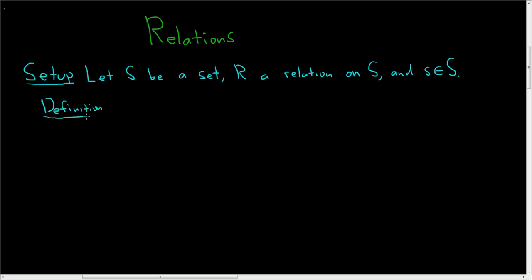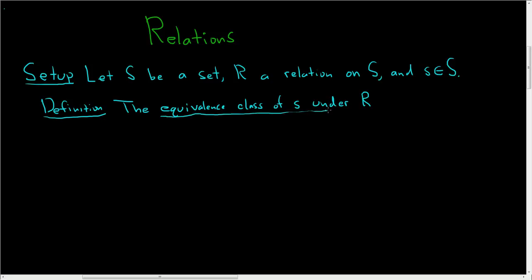Definition: the equivalence class of little s under the relation r. We're defining what is the equivalence class of little s under r. It's a set — denoted with a bar — of all the x's in S such that x is related to little s. If you have a member of this set, then it's related to little s via the relation r.